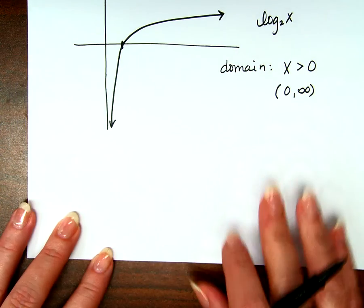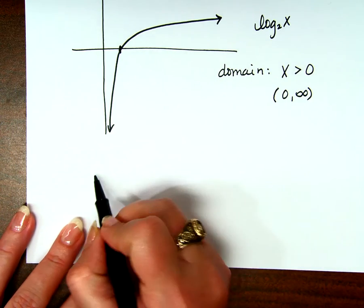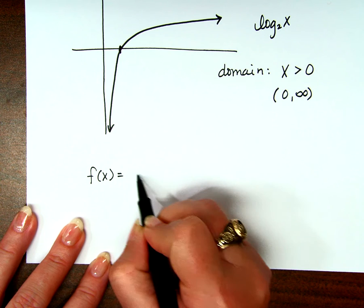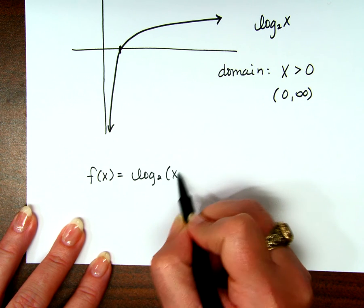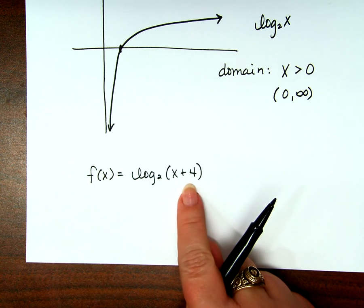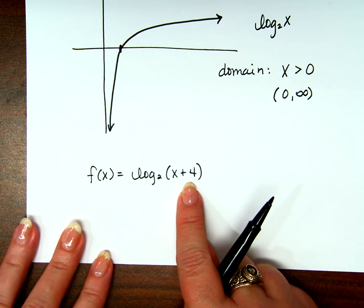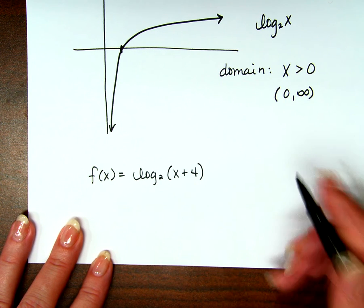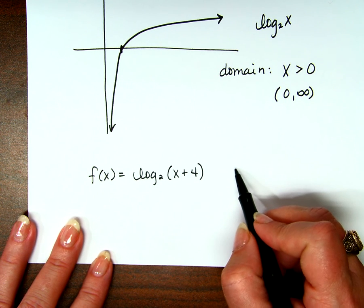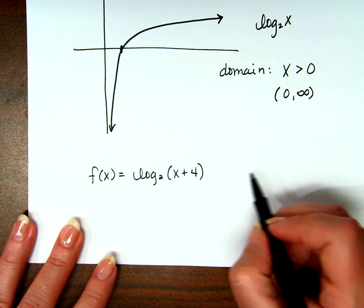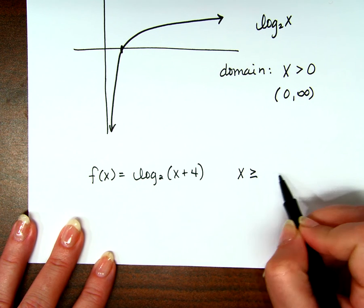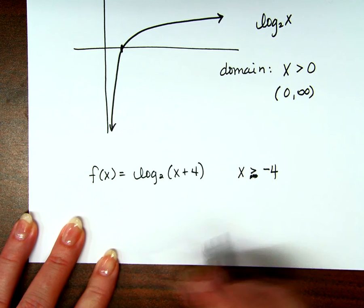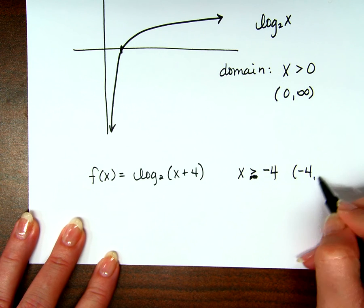If you're asked to find the domain of any random function, based on transformations, like for instance, f(x) equals log base 2 of x plus 4. x plus 4 is a horizontal shift, and it's moving to the left 4. So this time, where's the domain? We moved everything to the left 4. So everything is going to be greater than negative 4. Or from negative 4 to infinity.